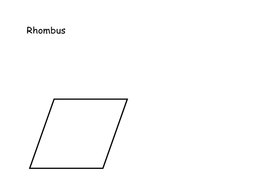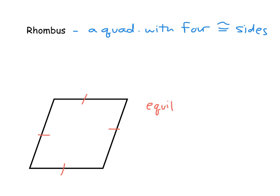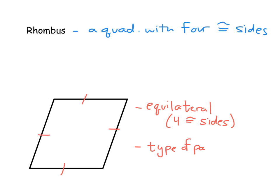Our next special quadrilateral is the rhombus. A rhombus is a quadrilateral with four congruent sides. To mark that, we just put the same tick mark on all four sides to indicate they're all congruent. Another vocab word from studying polygons is 'equilateral,' and a rhombus is considered to be an equilateral quadrilateral because it has four congruent sides. And just like the rectangle, a rhombus is also a type of parallelogram — more specific than just any old parallelogram because it has the four congruent sides.